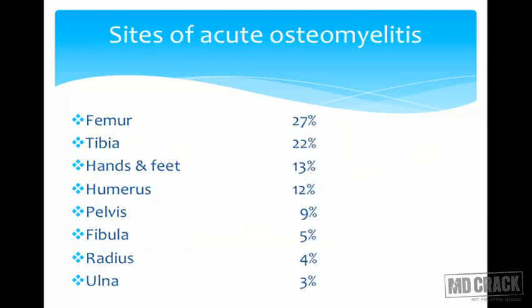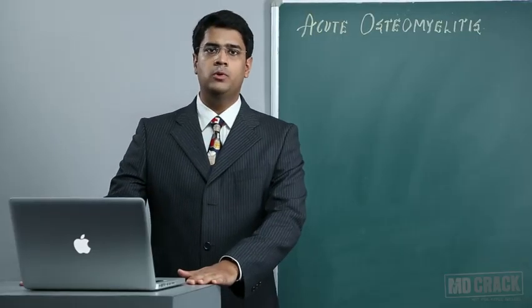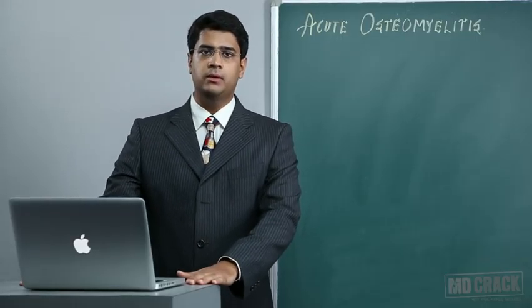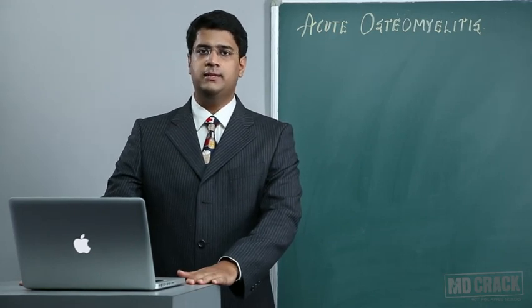The common sites of acute osteomyelitis: it can affect any bone but most commonly affects the long bones. The femur is affected in almost 27% of cases, followed by the tibia. The humerus accounts for about 12%, hands and feet around 13%, with lesser involvement of the pelvis, fibula, radius, and ulna. The most common bone is the femur, followed by the tibia — this can also come as an MCQ question.